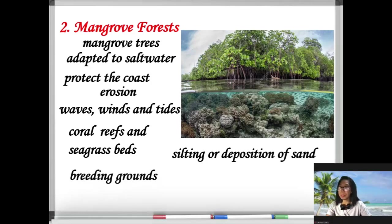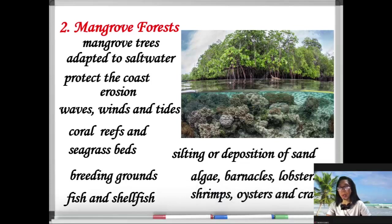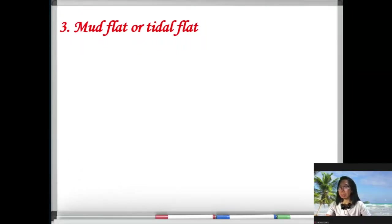Mangrove forests are also the breeding grounds for different varieties of fish and shellfish. Other organisms found in this habitat are algae, barnacles, lobsters, shrimp, oysters, and crabs.